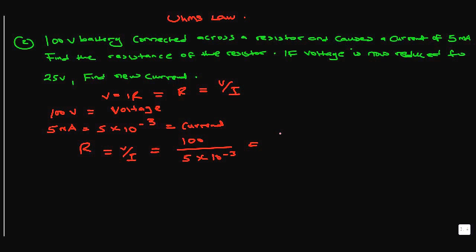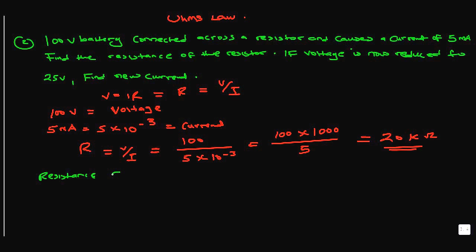That gives us 100 times 1000 over 5, which is 20,000 ohms — or 20 kilohms. So our circuit resistance is 20 kilohms.